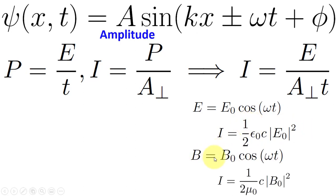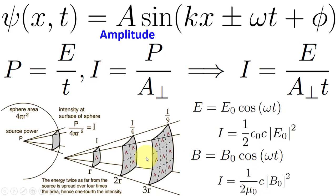Similarly, for a magnetic field B = B₀·cos(ωt), the intensity is proportional to B₀ squared, with a constant of proportionality C/(2μ₀). Here ε₀ is the permittivity of free space, μ₀ is the permeability of free space, and C is the speed of light. Let's understand the relation of intensity with unit area.